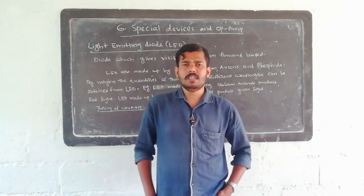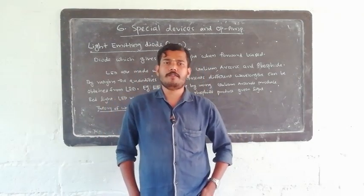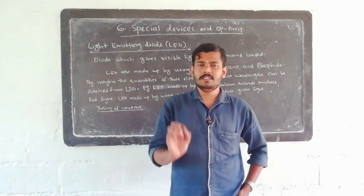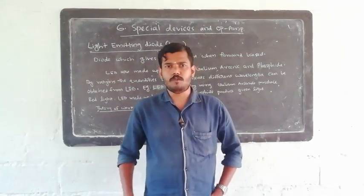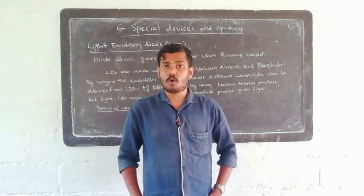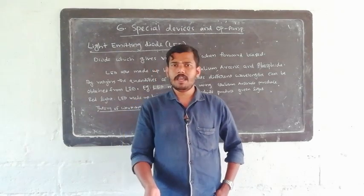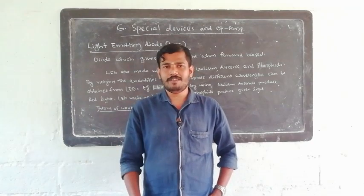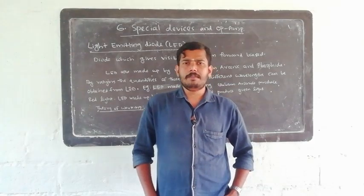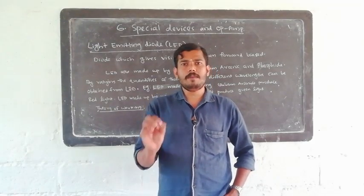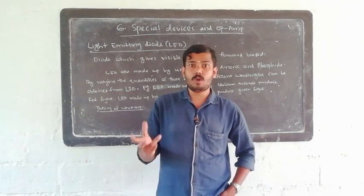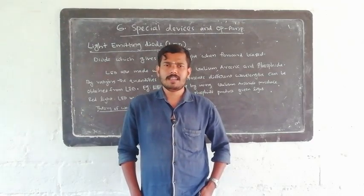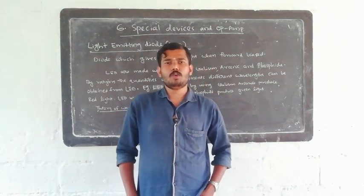Let's talk about LED. LED full form: Light Emitting Diode. LED is called a diode. In forward bias condition, LED positive is connected to battery positive, and LED negative is connected to battery negative — that's forward bias. In reverse bias, LED positive is connected to battery negative, and LED negative to battery positive. LED operates in forward bias condition, and in that condition, light is produced. Diodes which can produce light when forward biased are known as LED — Light Emitting Diode.